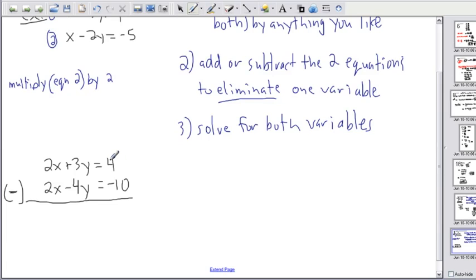So I'm going to have 4 minus negative 10. It's really important to be careful with the signs here. It's not just 4 minus 10. I've got to subtract them. So 4 minus negative 10, a minus minus gives you a plus, so 4 plus 10 gives you 14. Same thing here, 3y minus negative 4y gives you 3y plus 4y, so that's 7y. And 2x minus 2x cancels out. I don't have any x's going on. I've eliminated one variable.